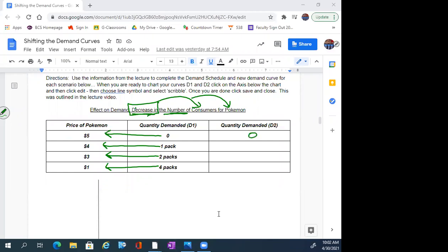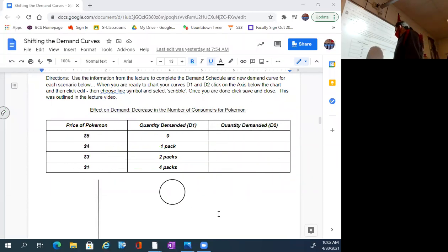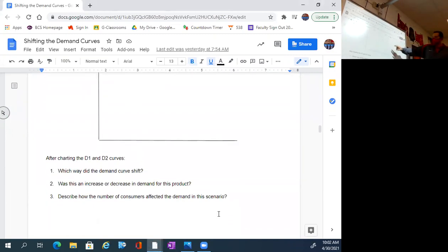So at zero, we're going to go zero. At one, you know, maybe zero. Or you can keep it at one. That would be appropriate. That'd be okay. All right. Or maybe even just a half. You could go a half there. Instead of two packs, maybe you only have one. And instead of four packs, maybe you have two or three. Okay? That's how you do this. And then you're going to chart it out. And then you're going to answer these three questions. Which way did the demand curve shift? What was it? Was this an increase or a decrease? And then describe. Look at that word. Describe how the number of consumers affected the demand. Talk to me. Like, tell me, well, this is what happened. And that's why demand dropped. Okay? All right.